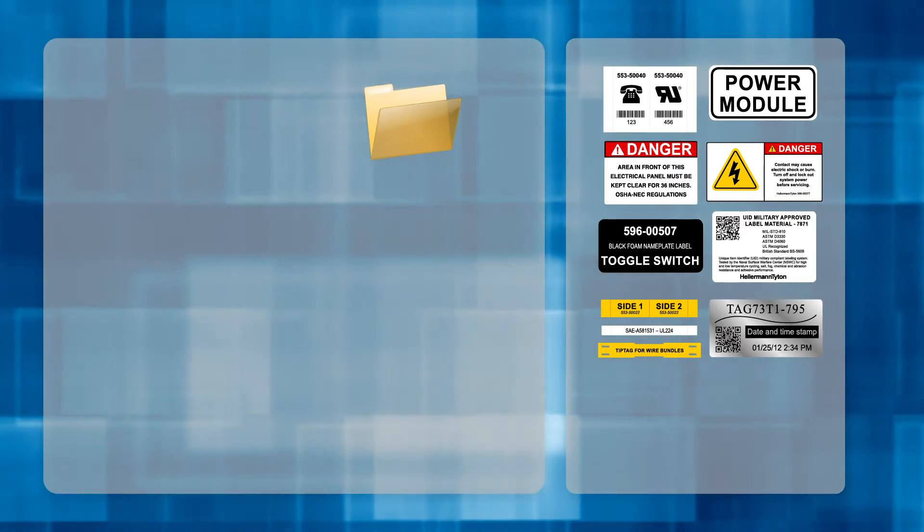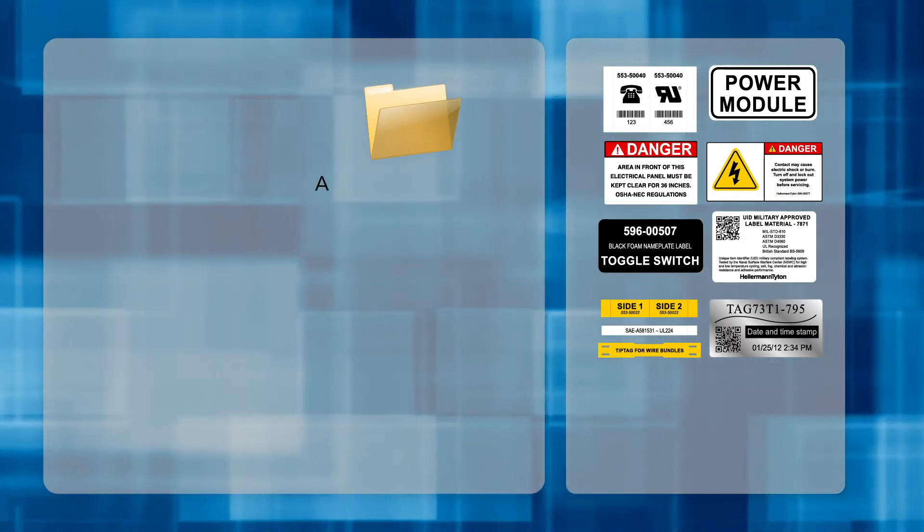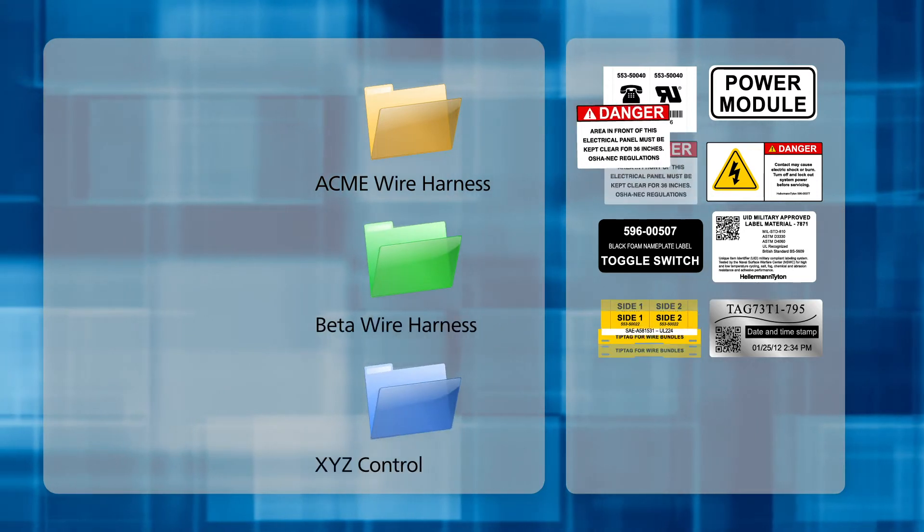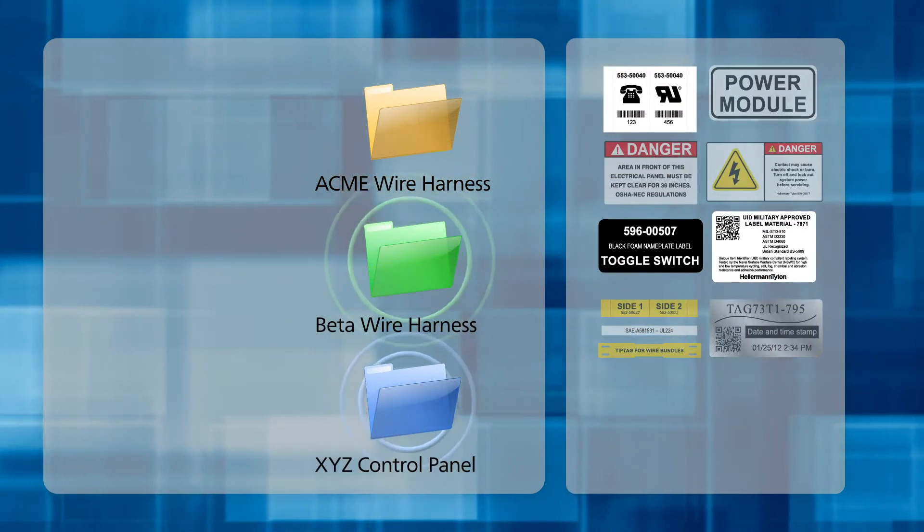Let's take it to the next level. Need multiple labels for repeat customer jobs, such as a harness or control panel? Of course, create a job folder. Give it a descriptive name, like Acme Wire Harness. Then, simply drag and drop the appropriate labels to the folder.